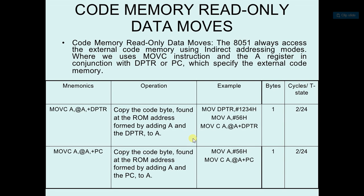In theoretical terms, the content of the A register is added with the content of DPTR, and the result is the address of the memory location from where the data is copied to the A register.